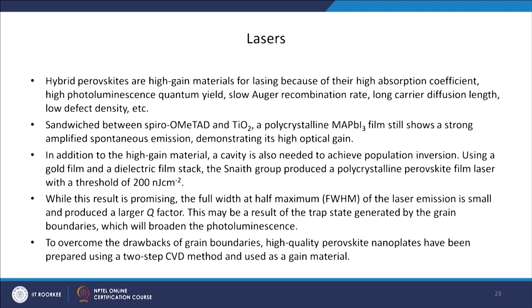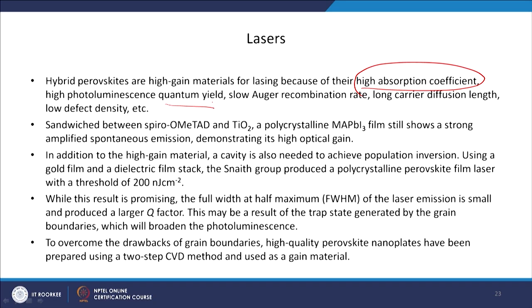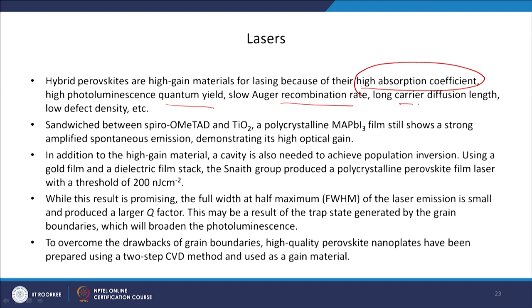Perovskite single crystal has also been used for fabricating lasers. Hybrid perovskites are high gain materials for lasing because of their high absorption coefficient, high photoluminescence quantum yield, slow Auger recombination rate, long carrier diffusion length, and low defect density. The perovskite single crystal has a very high absorption coefficient, and photoluminescence quantum yield — the number of photons emitted per absorbed incident photon — is also very high. Since the defect state is lower, the recombination rate is also lower and carrier diffusion length is longer.